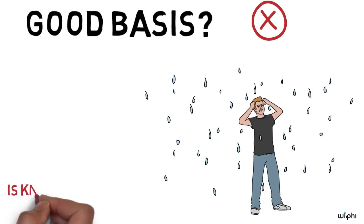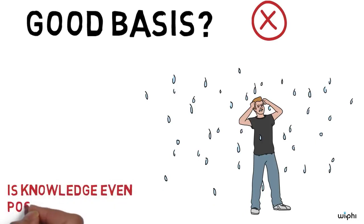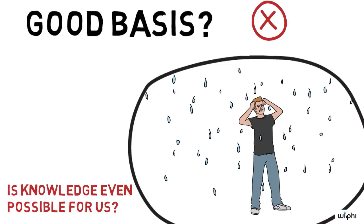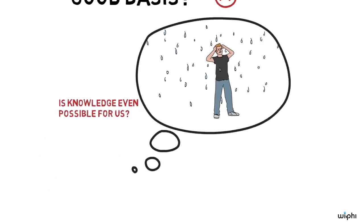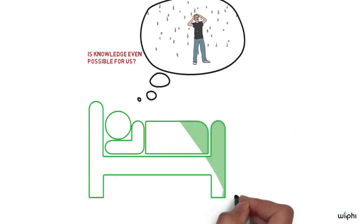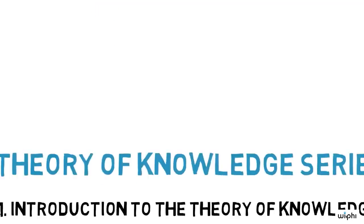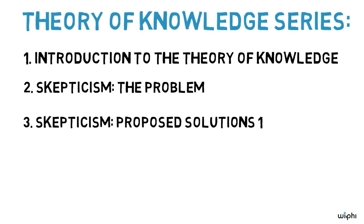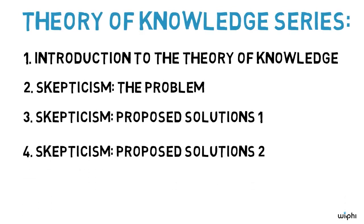But before we get to that problem, we'll tackle a more basic problem. Is knowledge even possible for us? Even in the best case scenario, when it feels like you're standing right outside, right in the rain, can you really know that it's raining outside? Could you be dreaming, for example, on a clear night? This is the problem of skepticism, explored in the next video. The two following videos will explain possible solutions to skepticism.